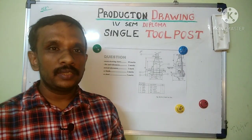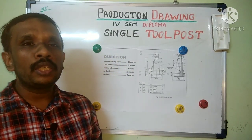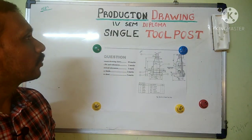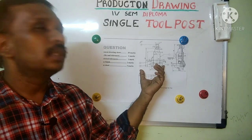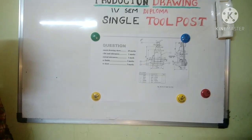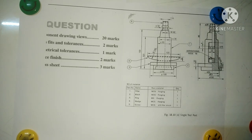Welcome to Sunset Solutions. Today we are going to continue the production drawing — the details drawing of a single tool post. This is an important exam question. A tool post, as the name suggests, is used to support and hold the cutting tools in any machine. This particular tool post is used for the lathe machine.